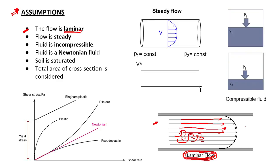Laminar flow is measured by the Reynolds number. The formula is: Re equals rho times V times D divided by mu. If the Reynolds number is less than 2000, this means the flow is laminar. So Darcy's Law is valid only for laminar flow.